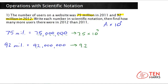Because these numbers both have the same place values — ten millions and millions — with six zeros, the decimal point moves the same number of places, so you can use the same exponent. You get 10 to the 7 for 92 million as well. Now, to find how many more users there were in 2012 than 2011, you're going to subtract.